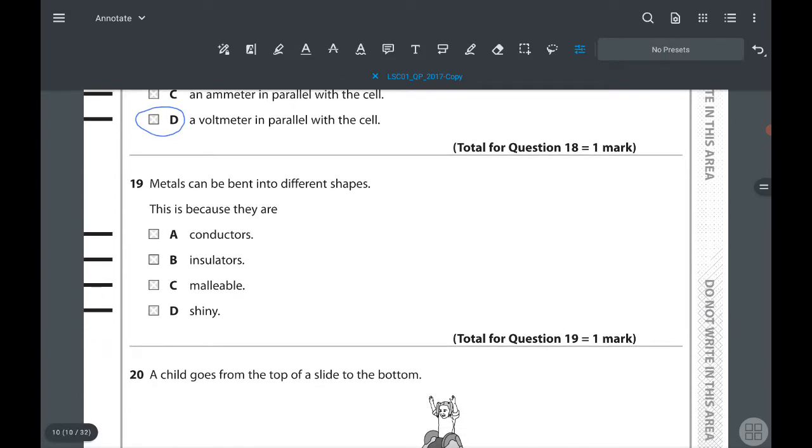19th question: metals can be bent into different shapes. This is because they are malleable. Conductors and insulators, we know, are related with heat and electricity. Shininess is an appearance. So malleability is the property they're looking for.